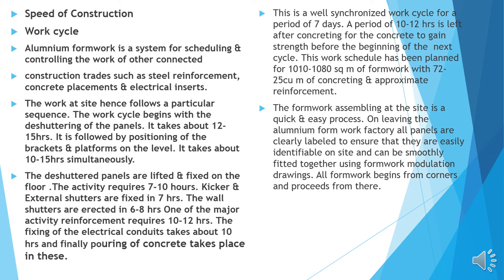The formwork assembling at the site is a quick and easy process. On leaving the aluminum formwork factory, all panels are clearly labeled to ensure that they are easily identifiable on site and can be smoothly fitted together using a formwork modulation drawing. All formwork begins from the corner and proceeds from there. The system usually follows a full cycle.